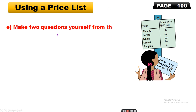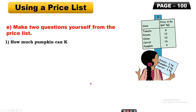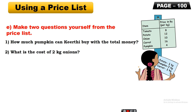Question E: Make two questions yourself from the price list. You can make any questions you like. Here are three sample questions: First — how much pumpkin can Kirti buy with the total money? Second — what is the cost of 2 kg onions? Third — how much does 3/4 kg of carrots cost? You can make more questions if you like.